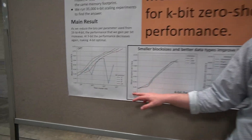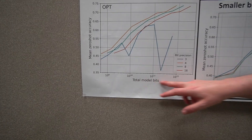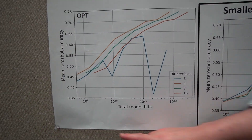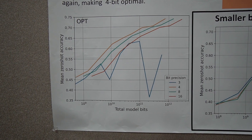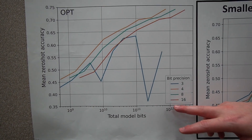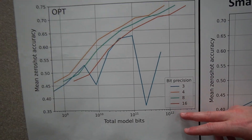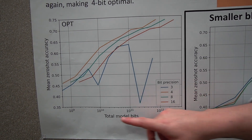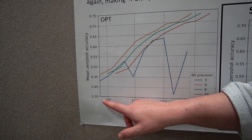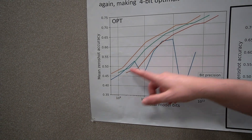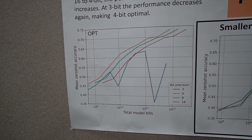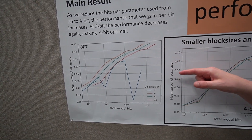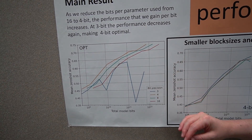These are the main results. On the x-axis we have the total amount of bits in the model; on the y-axis, zero-shot accuracy over four tasks; and in colors, the different bit precisions. Going from 16 to 8 to 4-bit precision, the overall information density — zero-shot accuracy per bit — increases. That means you want more parameters at 4-bit precision rather than fewer parameters at 8-bit precision.